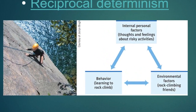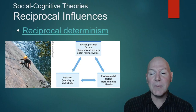Using the rock climbing example: interpersonal factors include your thoughts and feelings about risky activities; environmental factors include your friends enjoying rock climbing. Combined, these could lead to the behavior of learning to rock climb. When all of those influences are together, you're probably going to go rock climbing.